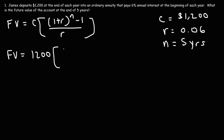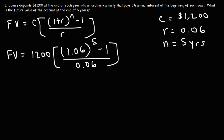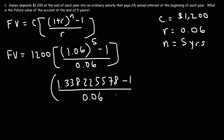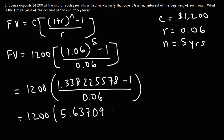Now we plug the numbers into the formula. C is $1,200, times (1 + 0.06), which is 1.06, raised to the 5th power, minus 1, divided by 0.06. 1.06 raised to the 5th power equals 1.338225578. Subtracting 1 gives 0.338225578, and dividing by 0.06 gives 5.63709296.